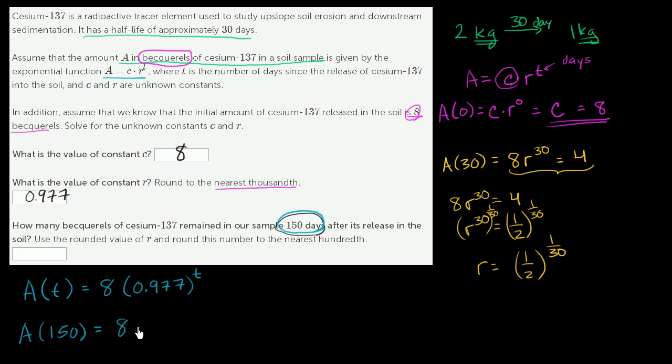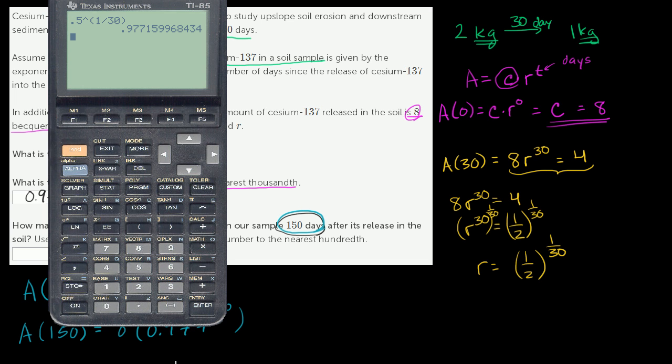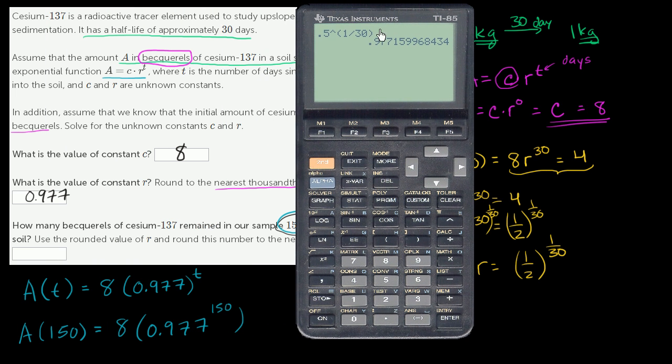Well, that's going to be 8 times 0.977 to the 150th power, and so clearly we need a calculator for this. So let's calculate that. It's going to be 8 times, and they told us to use our rounded value of R, so it's going to be 8 times 0.977 to the 150th power.